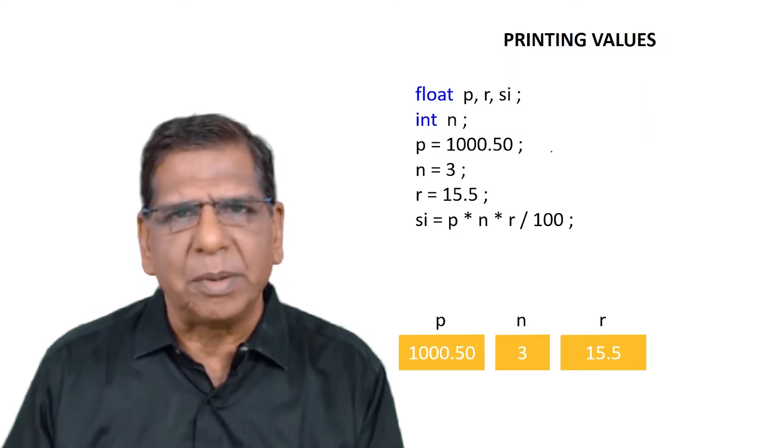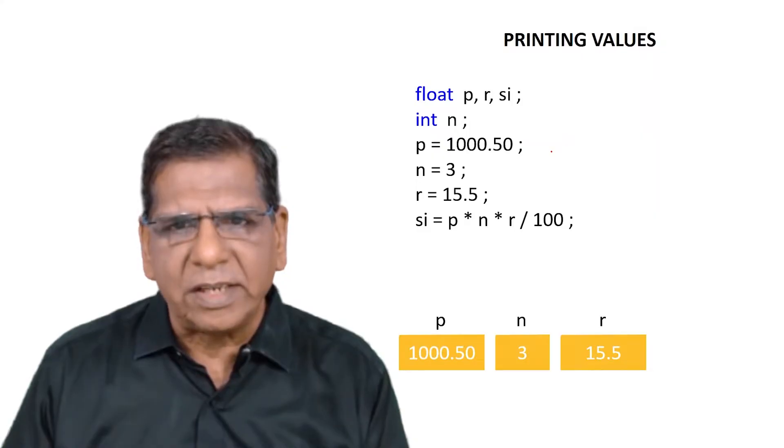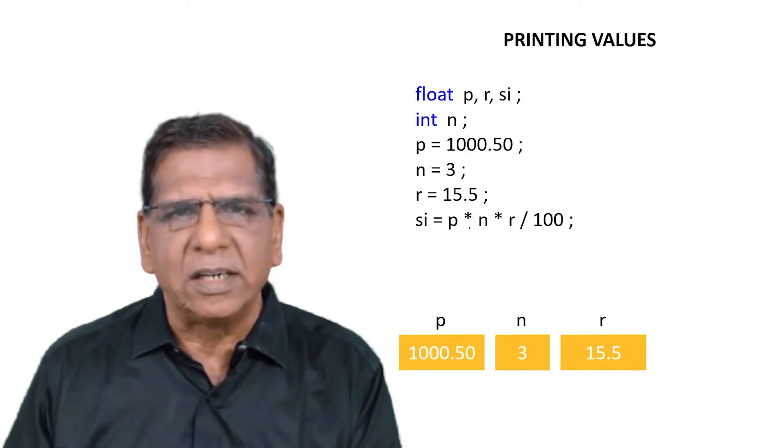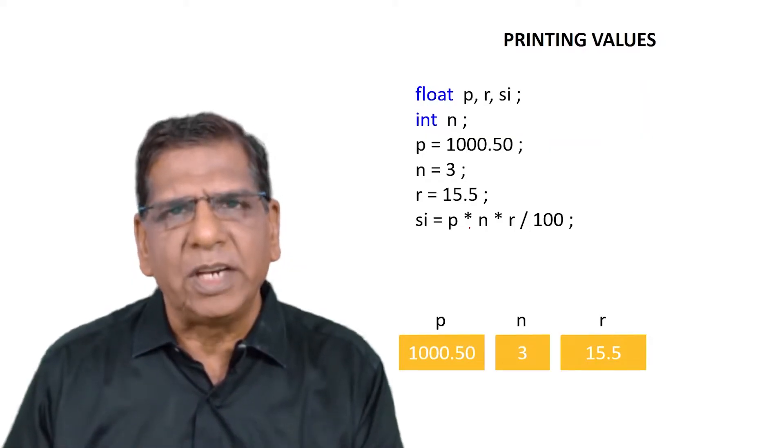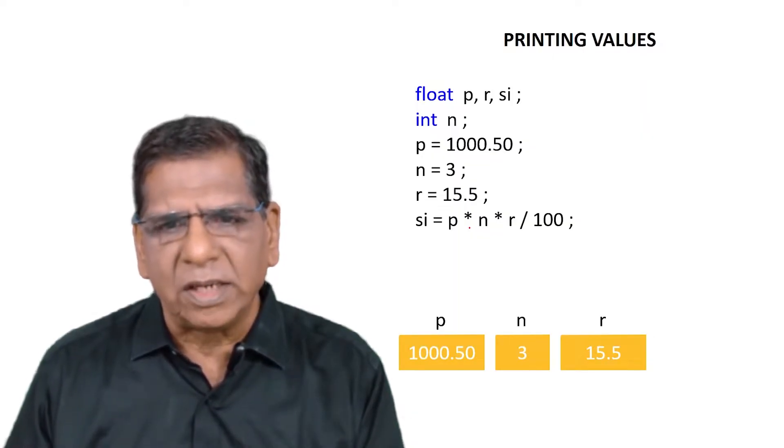So when I say SI equal to P into N into R slash 100, realize that we are not multiplying alphabets P, N, and R. The moment we use the variable name P, the value that is stored under that location, in our case 1000.5, will be multiplied with the value that is stored under location name N, that is 3, and the result would then be subsequently multiplied with 15.5.